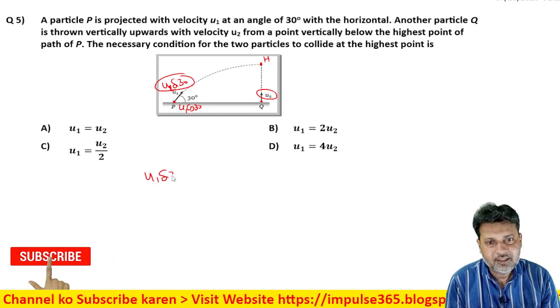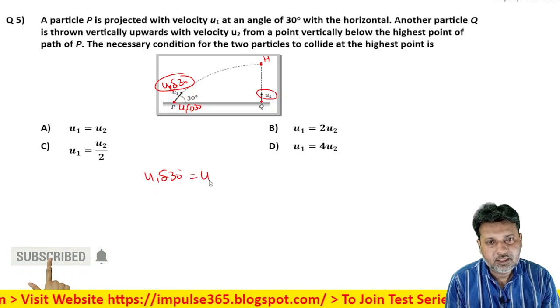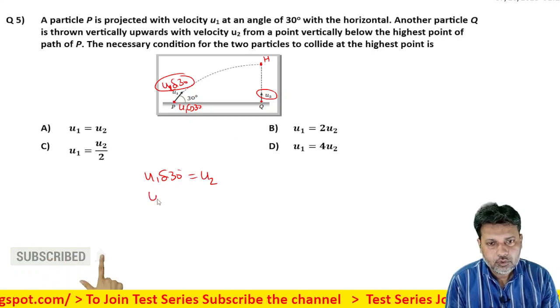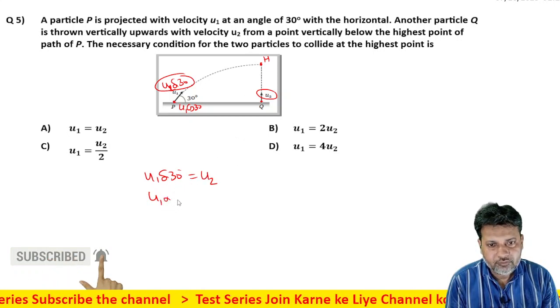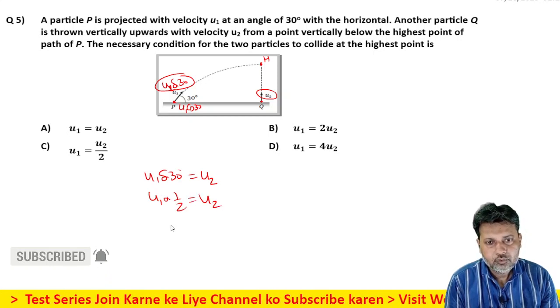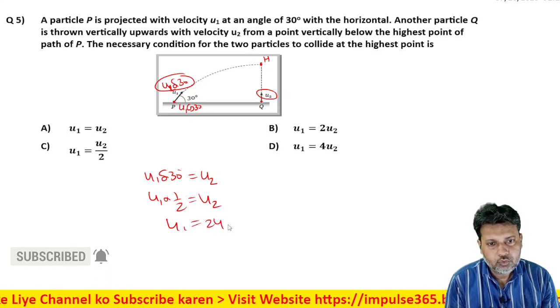Yarni U1 sin 30 degree equal hona chahiye U2 ke, tabhi ye collide kar sakta hai. Toh sin 30 ki value kya hoti hai, 1 by 2. U2, U2. Toh U1 is equal to 2 U2 ho gaya.